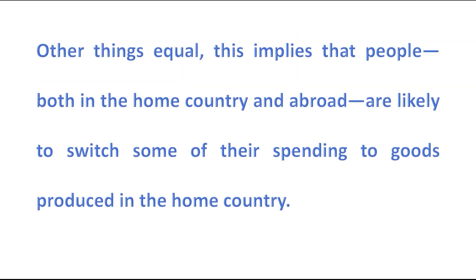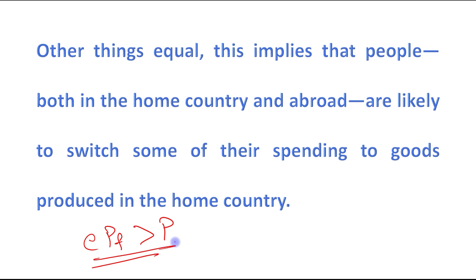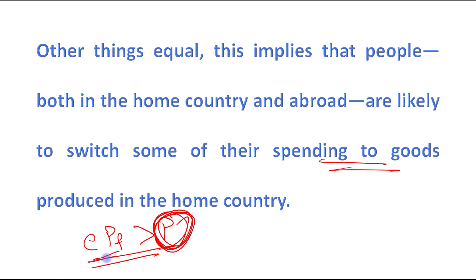Other things equal, this implies that people both in the home country and abroad are likely to switch some of their spending to goods produced in the home country. Because if foreign prices are greater than domestic prices, people will prefer to purchase the commodity from the home country. They will switch some of their spending to home-country goods because prices there are lower compared to foreign prices.